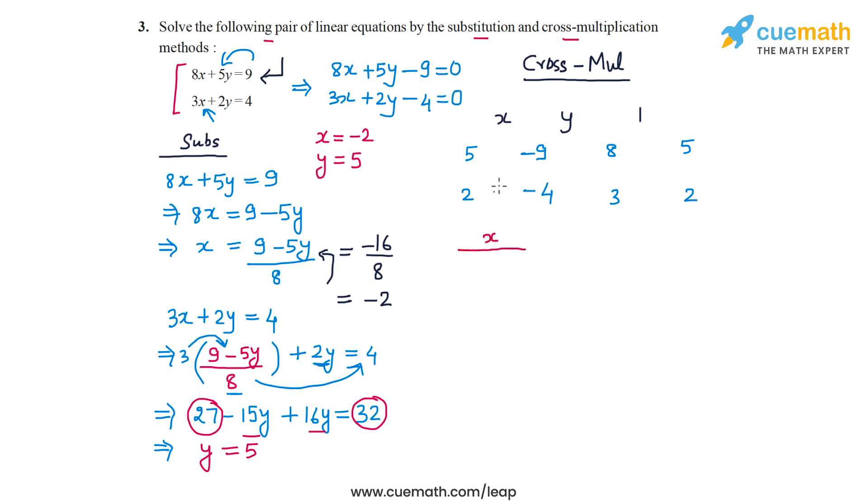So we will get x by 5 into minus 4, that's minus 20, minus 2 into minus 9, so that becomes plus 18. So x by minus 20 plus 18. This will be equal to y by minus 9 into 3, so that's minus 27, and then minus minus 4 times 8, so that's plus 32.